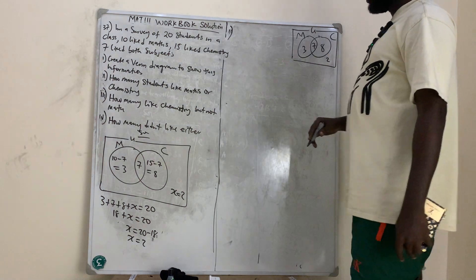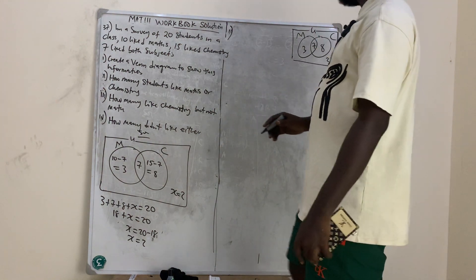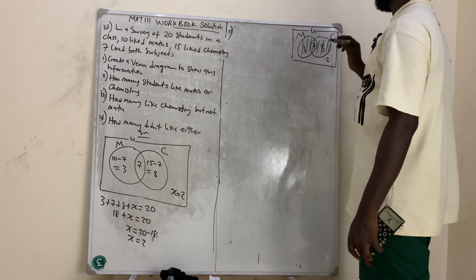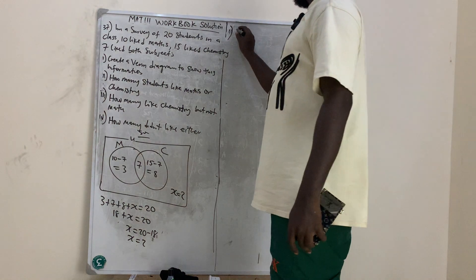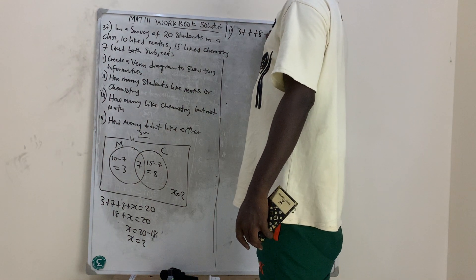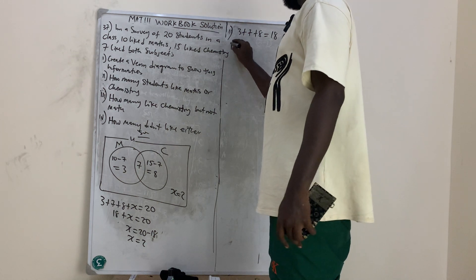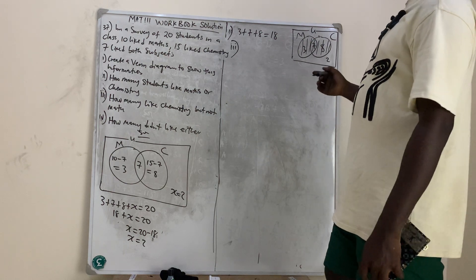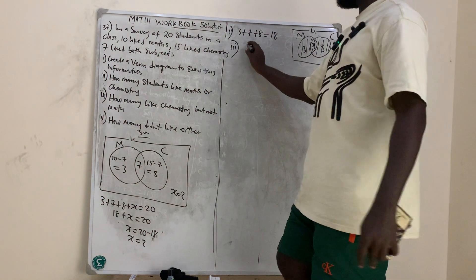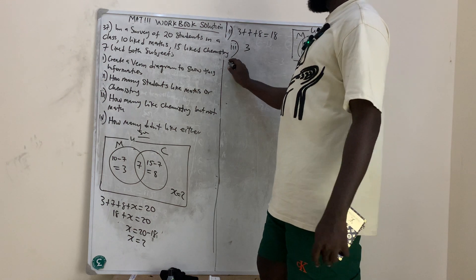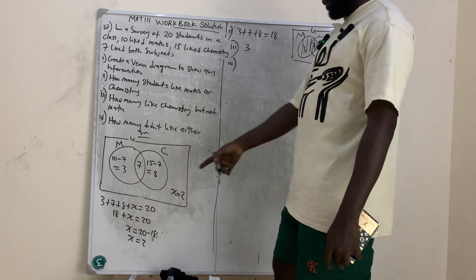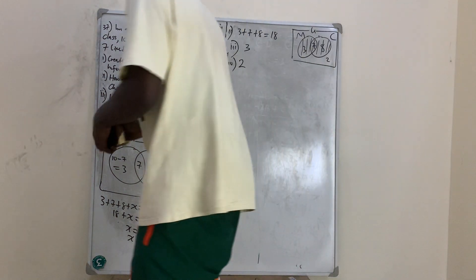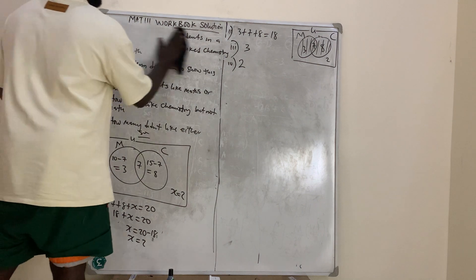Part two: How many students like maths or chemistry? That is everything inside both circles: 3 + 7 + 8 = 18 students. Part three: How many like chemistry but not maths? That is the chemistry-only region = 8. Part four: How many did not like either? That is the outside region = 2.